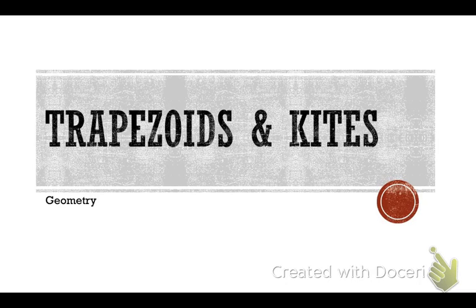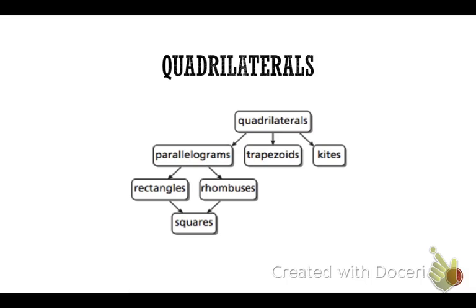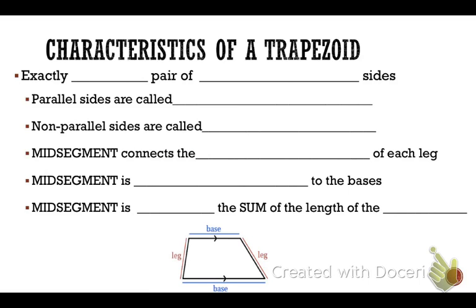Let's look at the properties of trapezoids and kites. If we go back to our graphic, we see that quadrilaterals are broken into parallelograms and then into trapezoids and kites. They have their own characteristics and they are not parallelograms. Let's look at a trapezoid first.